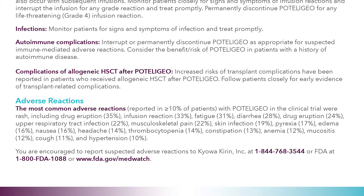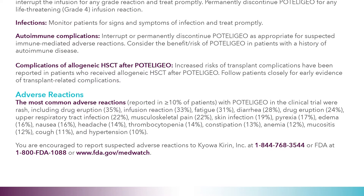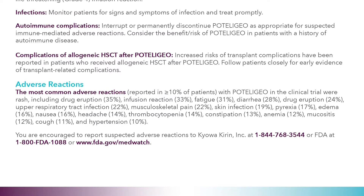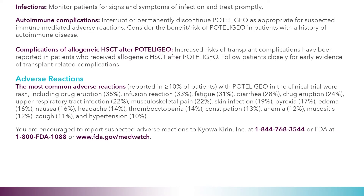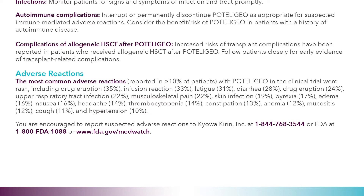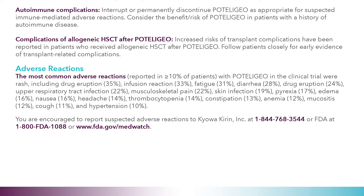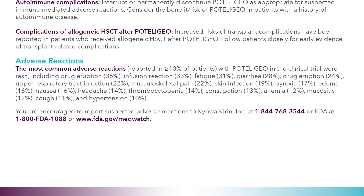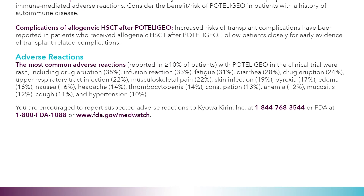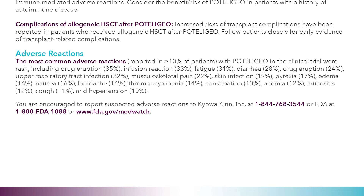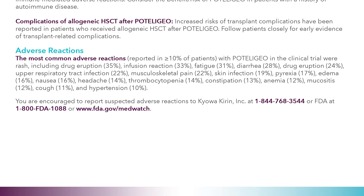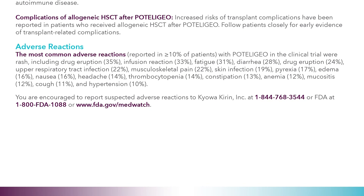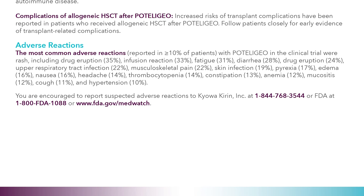Adverse reactions: The most common adverse reactions reported in ≥10% of patients with Poteligio in the clinical trial were: rash including drug eruption 35%, infusion reaction 33%, fatigue 31%, diarrhea 28%, drug eruption 24%, upper respiratory tract infection 22%, musculoskeletal pain 22%, skin infection 19%, pyrexia 17%, edema 16%, nausea 16%, headache 14%, thrombocytopenia 14%, constipation 13%, anemia 12%, mucositis 12%, cough 11%, and hypertension 10%.